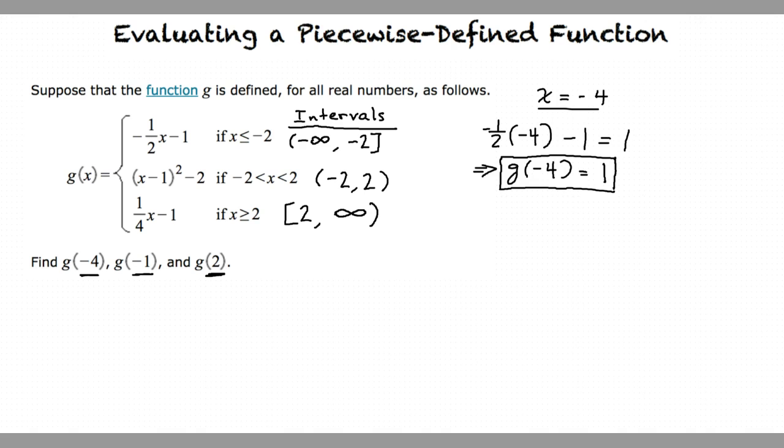Now for g of negative 1. Which domain does negative 1 fit into? It fits into the second domain. Yes, and now we will substitute negative 1 into the second part. Negative 1 minus 1 all squared minus 2 equals 2. So g of negative 1 equals 2.